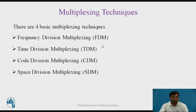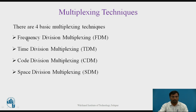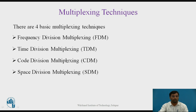There are four basic multiplexing techniques: FDMA, TDMA, CDMA, and SDMA — also referred to as Frequency Division Multiple Access, Time Division Multiple Access, Code Division Multiple Access, and Space Division Multiple Access. These are the four techniques used for multiplexing or channelization.